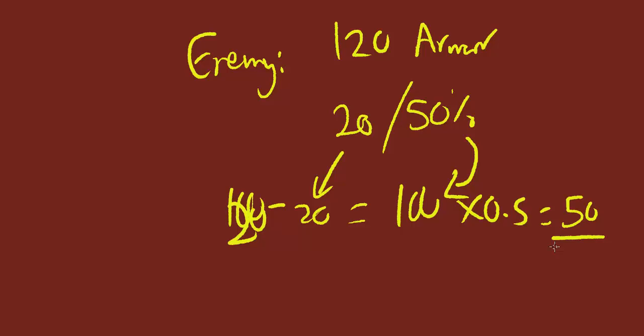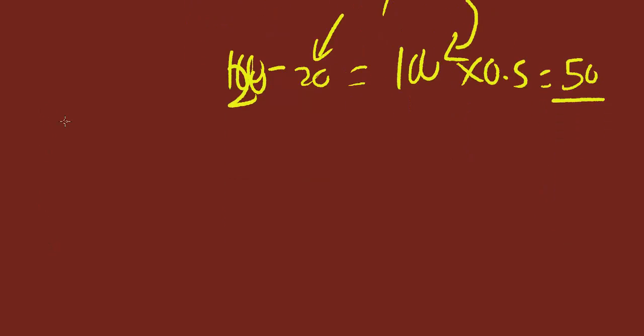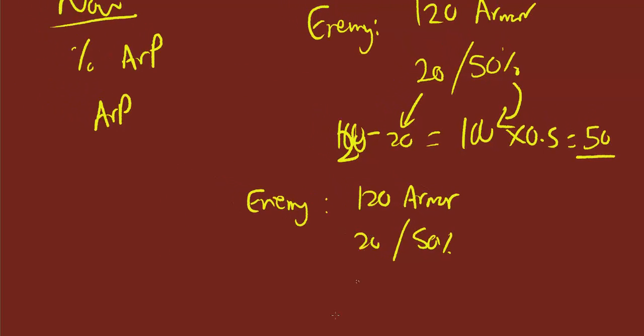Now, let's see how it looks after the Season 3 change. Let's take the same values here. The enemy has 120 armor, you have 50% armor penetration and 20 flat. Now remember, before, the flat armor penetration applied before percentage penetration. Now, the order has swapped around.